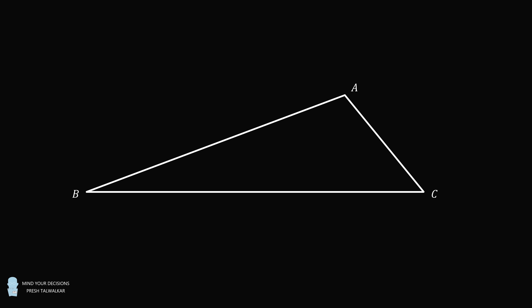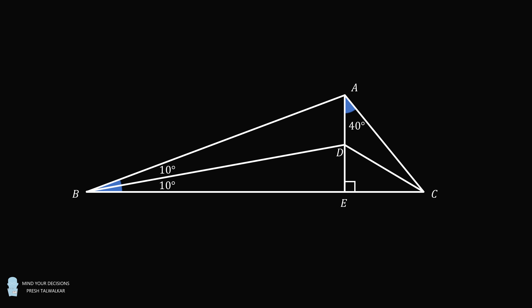Hey, this is Preshto-Walker. Let's start out with a construction on triangle ABC. From A, construct a perpendicular to the side BC at the point E. Angle CAE is equal to 40 degrees. From the point B, construct a line segment to AE that intersects at the point D. This line segment divides angle B into two angles of 10 degrees each. From the point D, construct a line segment to C. Let the measure of angle DCE be equal to X. The question is, what is the value of X? This is from a Polish mathematical Olympiad. Pause the video if you'd like to give this problem a try, and when you're ready, keep watching to learn how to solve this problem.